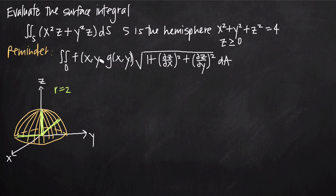We have the formula for the surface integral: the double integral of function f defined in terms of x, y, and z, multiplied by a square root value. To evaluate the surface integral, we need the partial derivative of z with respect to x and the partial derivative of z with respect to y. Since we don't yet have a function explicitly in terms of z, we start with the sphere equation and solve for z squared: z squared equals 4 minus x squared minus y squared.